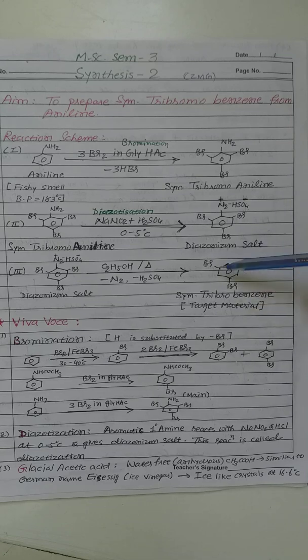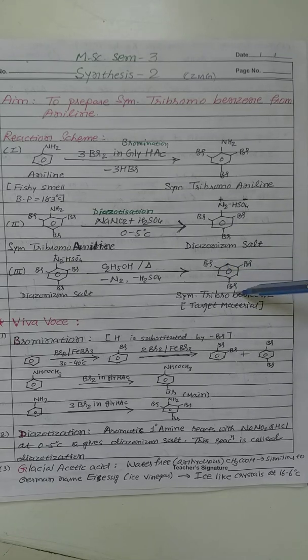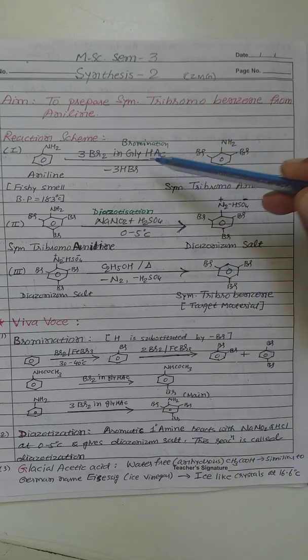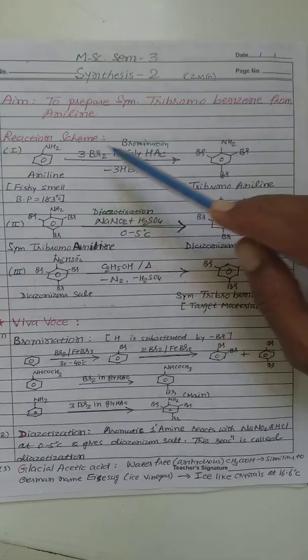See here in our target material three bromine attached, so bromination is required. So in first step chemical reaction, bromination of aniline occurs.